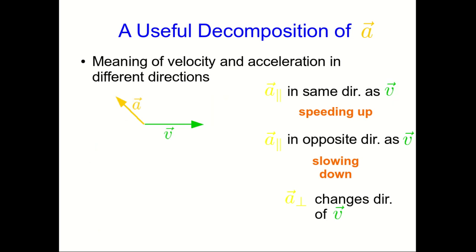We can look at a case where the acceleration is opposite the direction of the velocity and to the side. In this case the object must be slowing down because the parallel component of the acceleration is opposite the velocity, and the trajectory must also be curving. In another case, the object must be speeding up and its trajectory must be curving to the right.